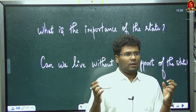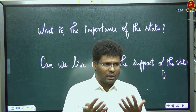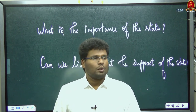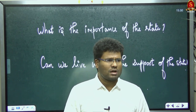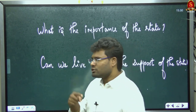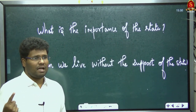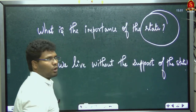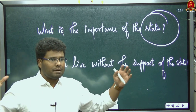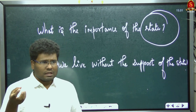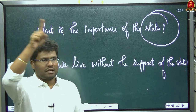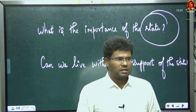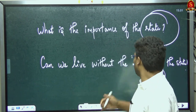Without the support of the state you cannot live in this world — it is very difficult. From your birth till death, without the support of the state you cannot survive. Aristotle says political science is a master science because political science deals with the state, and since the state is the ultimate authority — nothing can be above the state — political science becomes a master science. For example, if I invent something, whether that invention should come to the limelight or be hidden will be decided by the state.